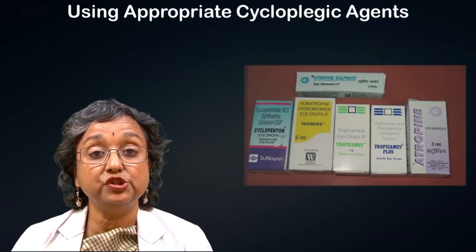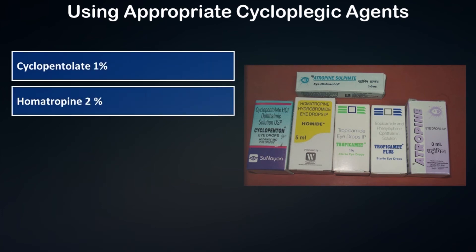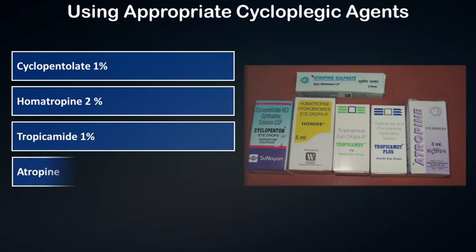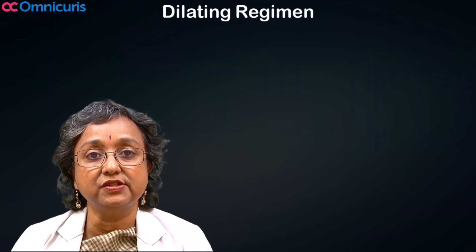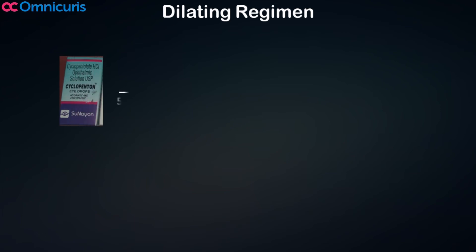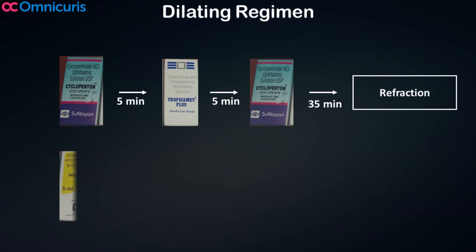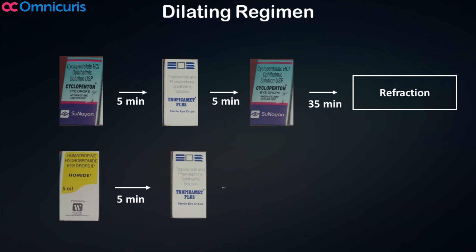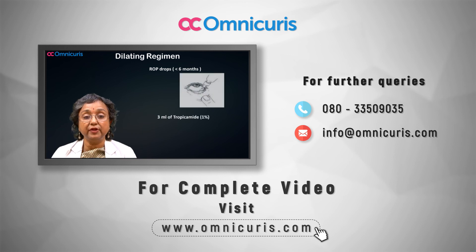The cycloplegic agents available are cyclopentolate one percent, homatropine two percent, tropicamide one percent, atropine one percent (the gold standard), and cyclomidrin. A dilating regimen could be: cyclopentolate one percent, followed five minutes later by tropicamide one percent, then another drop of cyclopentolate five minutes later, with refraction 35 minutes after that; or homatropine, five minutes later tropicamide, and refraction 45 minutes later. In premature children less than six months of age...